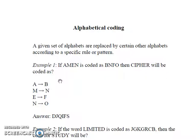Hence, in CIPHER, C will be coded as D, I will be coded as J, P as Q, H as I, E as F, and R will be coded as S. Hence, this is our answer.